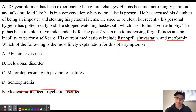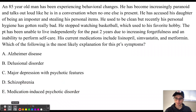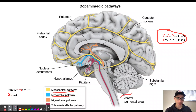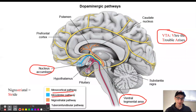Answer choice D is schizophrenia. We can rule out schizophrenia just by this person's age. With an 85-year-old, you would not really expect new-onset schizophrenia. Schizophrenia is most commonly diagnosed in young adults. Remember that there's going to be a disruption in the mesolimbic pathway and the mesocortical pathway, with the ventral tegmental area being where the trouble arises. Too much dopamine is sent from the ventral tegmental area to the nucleus accumbens, disrupting the mesolimbic pathway and resulting in positive symptoms like delusions and hallucinations.